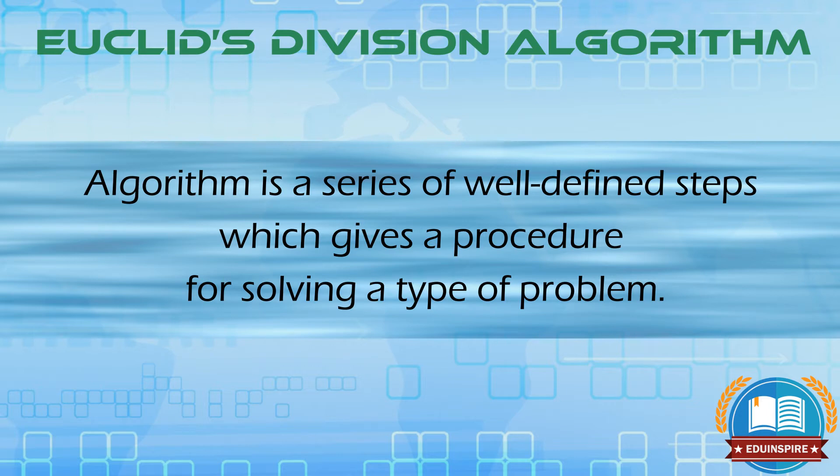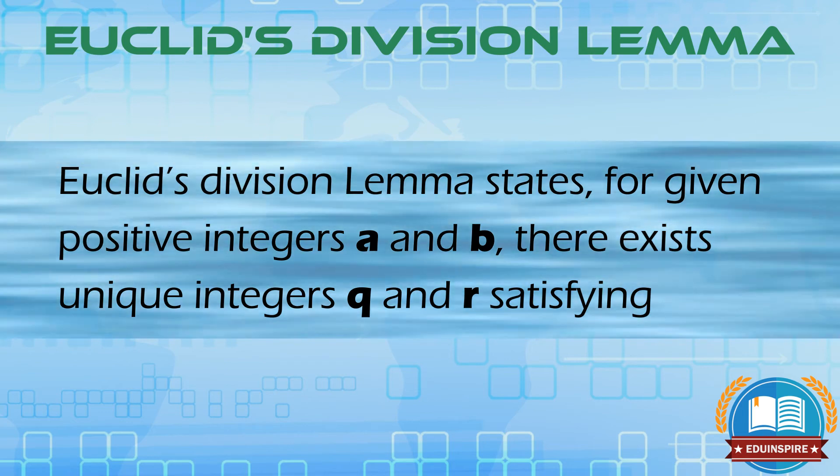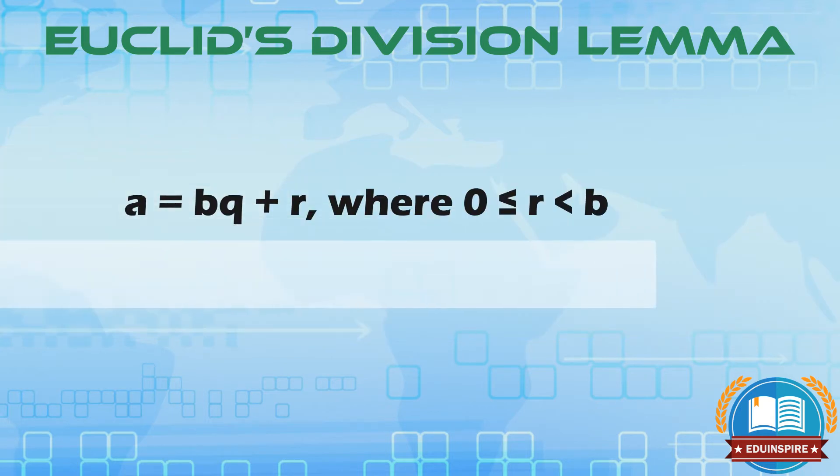Now let's understand what is Euclid's division lemma. It states for given positive integers a and b, there exist unique integers q and r satisfying a equals to bq plus r, where r is equal to or greater than zero but less than b.